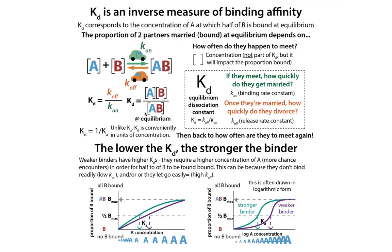We'll talk more about how this works out mathematically, but it comes down to the relationship where the KD equals the concentration of one partner at which half of the other partner is bound at equilibrium. So you mix them together and look at how much is bound once they've reached equilibrium. If you have a tighter binder, it's going to make more of the complex form. If more complex is formed, then the denominator is bigger, and your KD is smaller. If less is bound, the denominator is smaller and your KD is bigger.